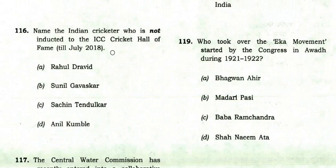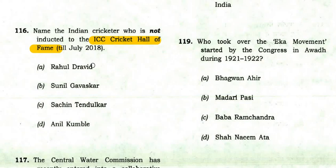Name the Indian cricketer who is not inducted into the ICC Cricket Hall of Fame till July 2018. Options: Rahul Dravid — inducted; Sunil Gavaskar — inducted; Sachin Tendulkar — actually Sachin Tendulkar was not inducted at that time, and the rest are inducted.